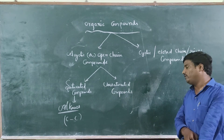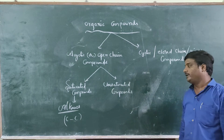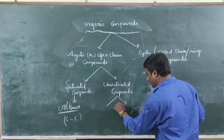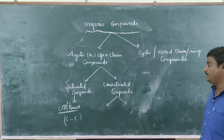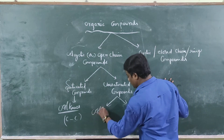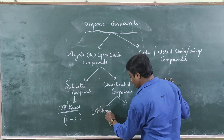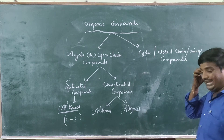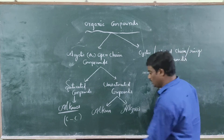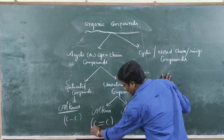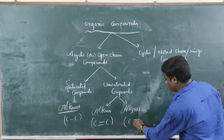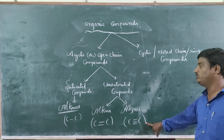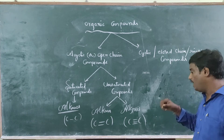Cyclic compounds include alkanes and other kinds. There is also a triple bond connection between carbon atoms in certain alkane types. Alkanes and all kinds are formed with different bond types.